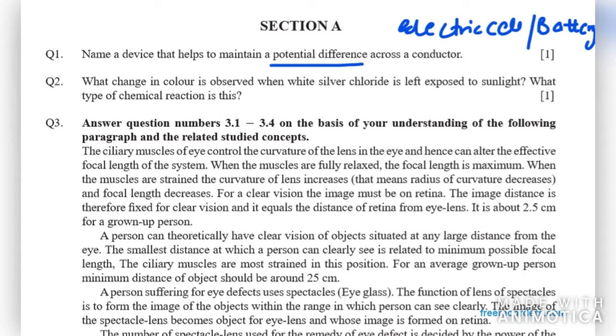Question number 2 says, what change in color is observed when white silver chloride is left exposed to sunlight? What type of chemical reaction is this? When silver chloride is left exposed to sunlight, we get silver or the color is gray. White color gets converted into gray. The type is photo decomposition. Don't write just decomposition, that won't fetch you marks. You have to write the complete answer: photo decomposition.